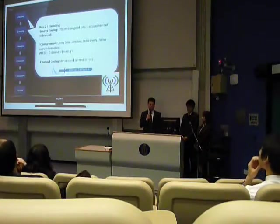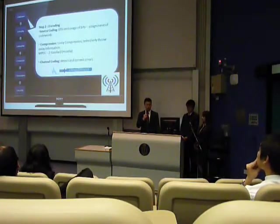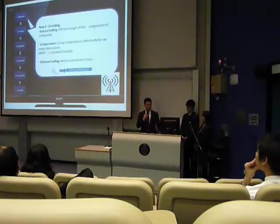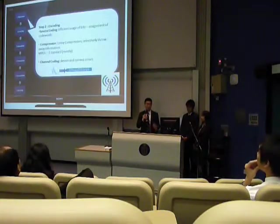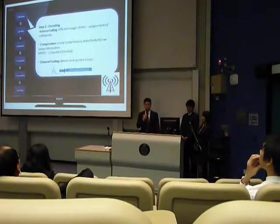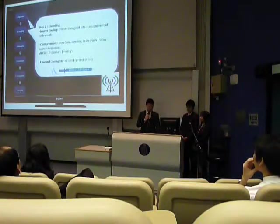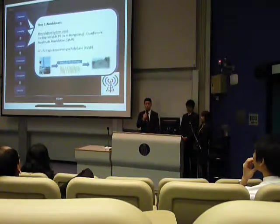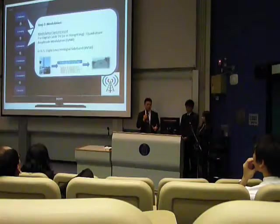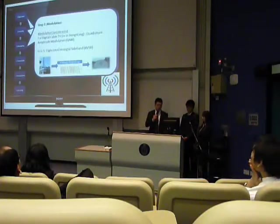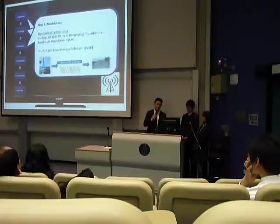The second step has three tasks: source coding, compression, and channel coding. Source coding arranges certain codewords to make the coding more efficient. Compression for digital TV most likely uses the MPEG-2 standard. Channel coding is used to detect and correct errors. The third step is modulation, which converts messages into a physically transmittable form. In Hong Kong, QAM is used, while the US uses a different system to modulate the signal.